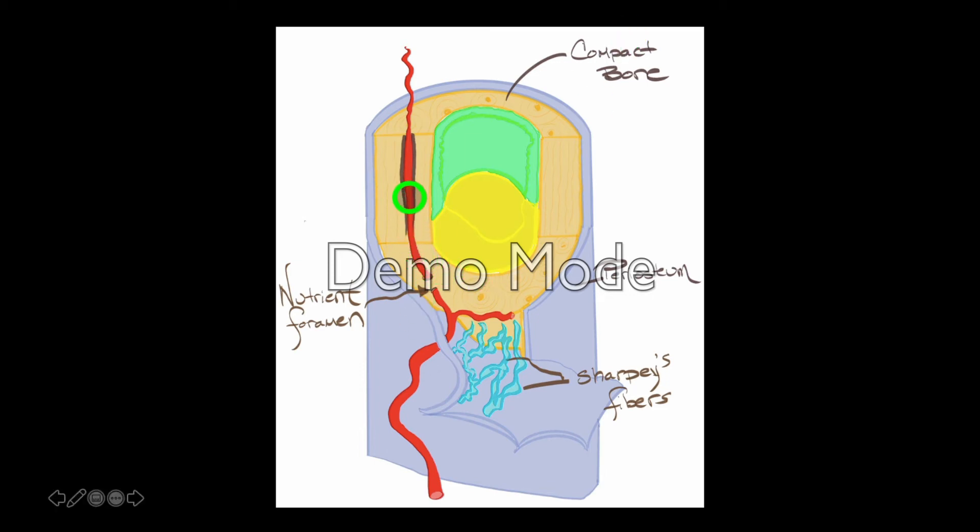And then this would proceed. And keep in mind from here, superiorly, this is running on the interior of compact bone immediately via the central canal of an osteon.